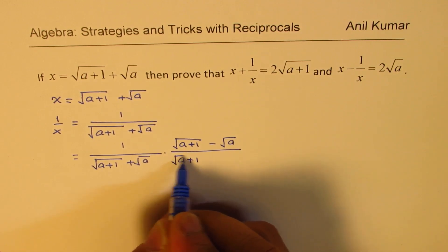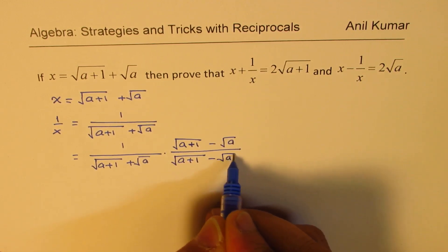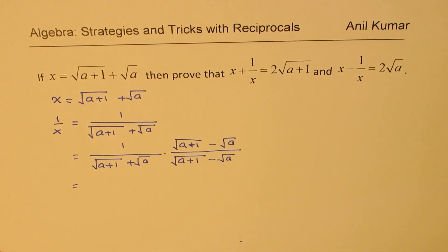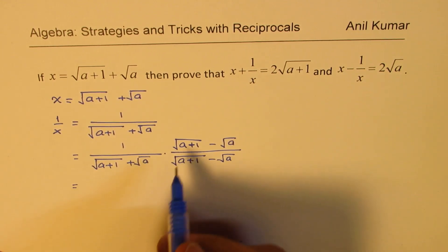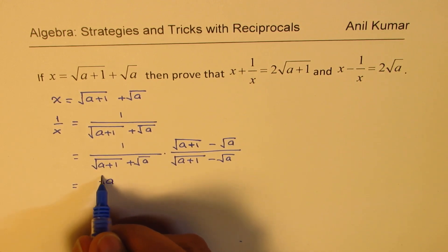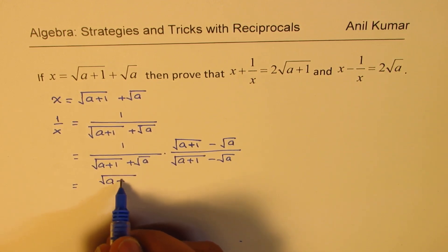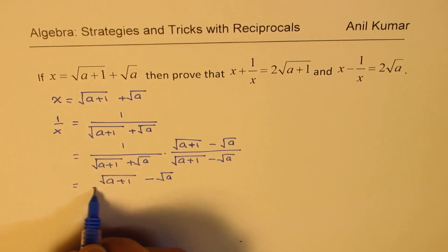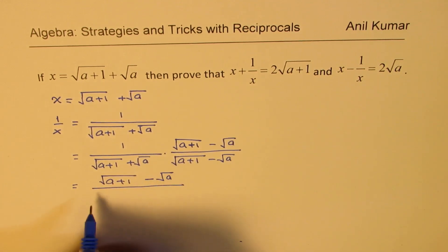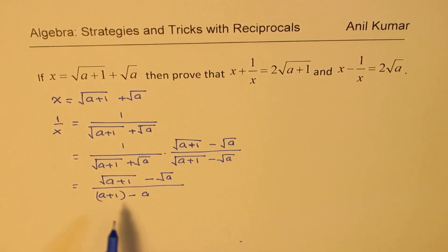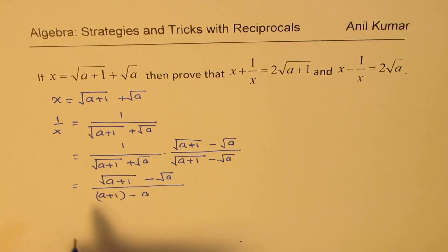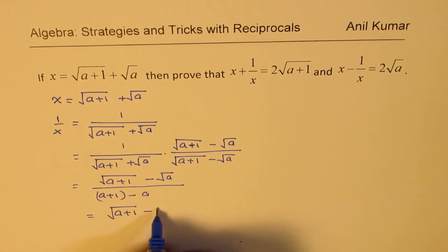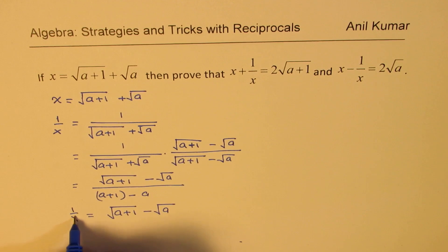Rationalization means to multiply and divide by the conjugate — we are rationalizing the denominator. So we multiply and divide by the conjugate of this denominator, which is square root of (a+1) minus square root of a. The difference of squares helps us get rid of the square root from the denominator. In the numerator we get square root of (a+1) minus square root of a, and the denominator is the difference of these two squares, which is (a+1) minus a. We began with a+1 purposely, since that becomes 1. Therefore 1 over x equals square root of (a+1) minus square root of a.